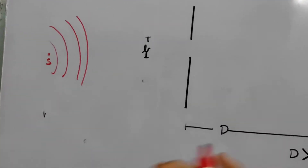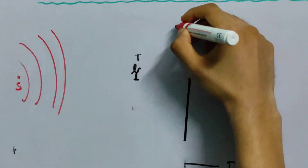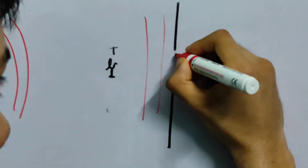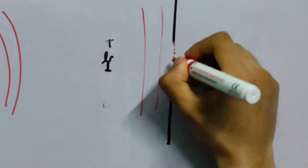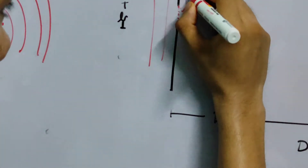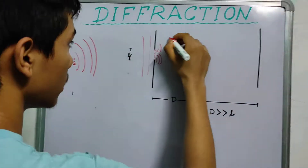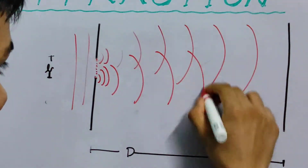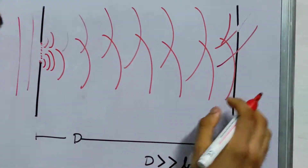Since D is very large compared to the slit width, we can say that all the wavefronts arriving at the slit are very nearly parallel. By Huygens' principle, all points within the slit will act as sources of secondary wavelets, and all of these waves will travel onward and produce an interference pattern.